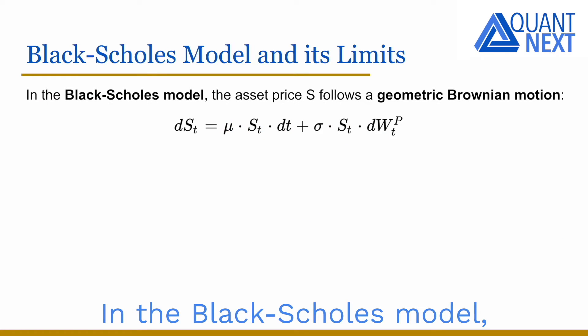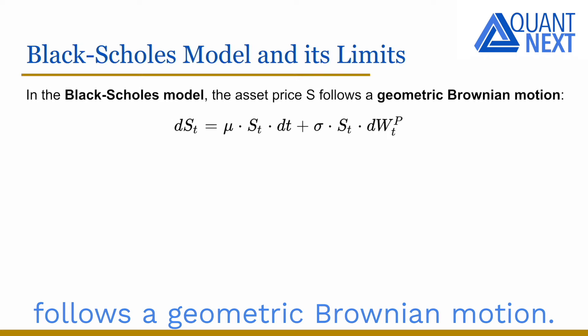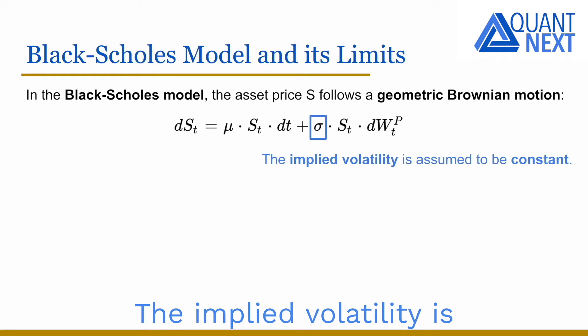In the Black-Scholes model, we assume that the asset price S follows a geometric Brownian motion. The implied volatility is assumed to be constant.